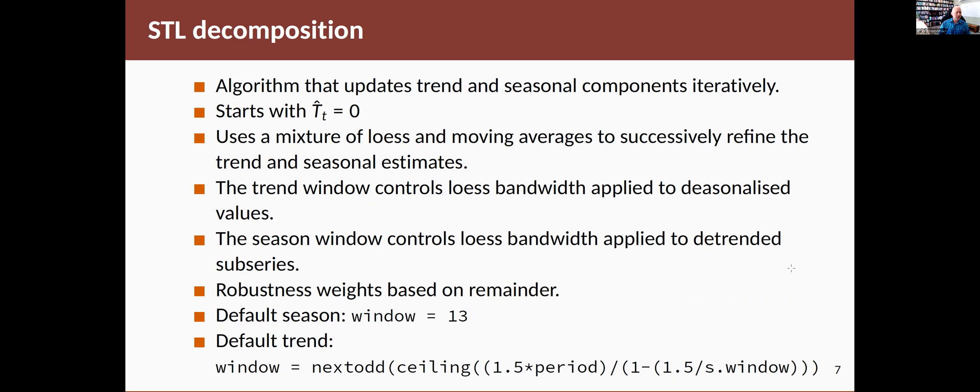So the trend window is controlling the bandwidth applied to the de-seasonalized values. The season window controls loss bandwidth applied to de-trended sub-series.